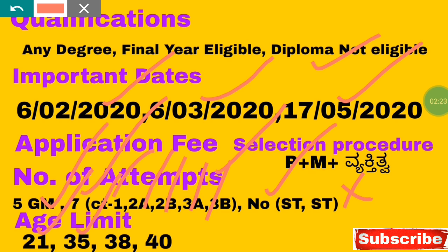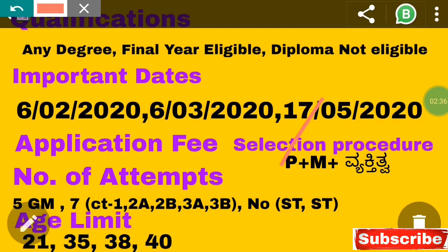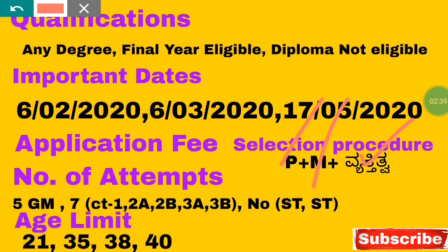For categories 2A, 2B, 3A, 3B, E, and OBC-N, the age limit is 38 years. For Category 1, SC, and ST, there is an additional 4-year relaxation. Regarding the selection procedure, there are three stages: Prelims, Mains, and Viva/Interview, after which a final shortlist is prepared.